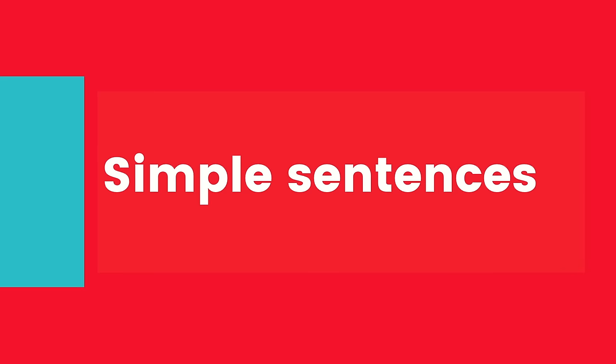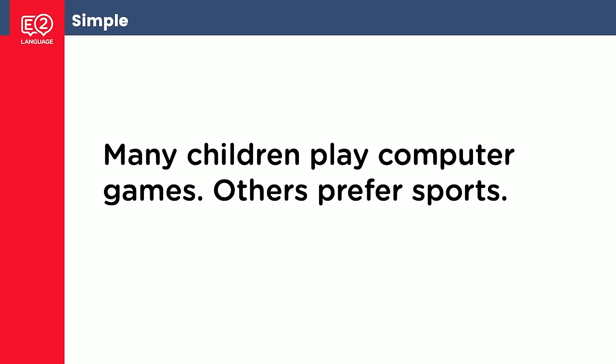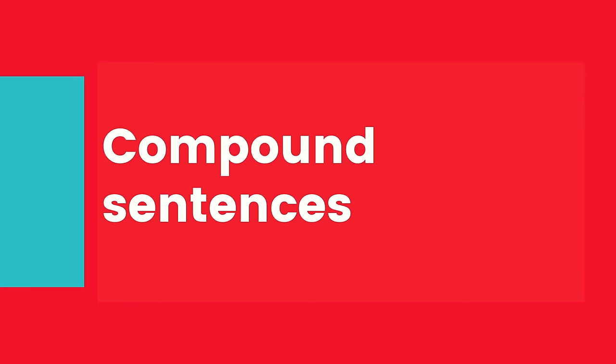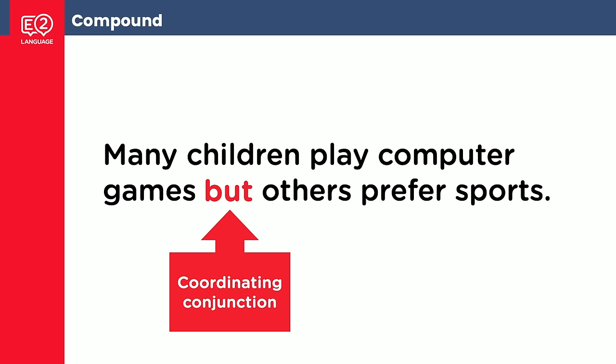We already saw some simple sentences. Here are a couple more: 'Many children play computer games' — we've got a subject and a verb, this is a full complete thought. 'Others prefer sports' — this is another complete thought. These are two simple sentences. How can I join them together to make compound sentences? We just put a word like 'but' in the middle. Now we've got a compound sentence — it has two full sentences, two complete thoughts, and a coordinating conjunction in between them.